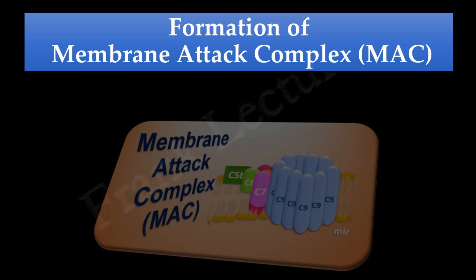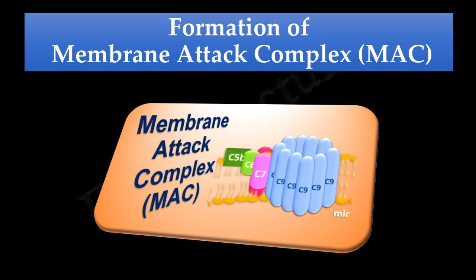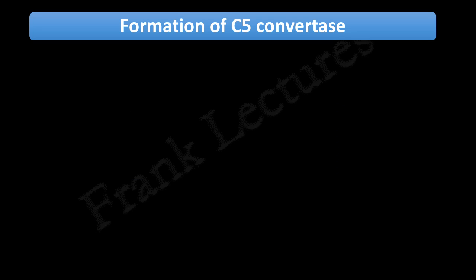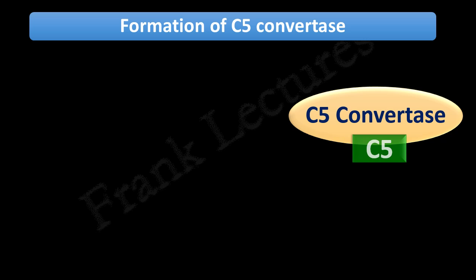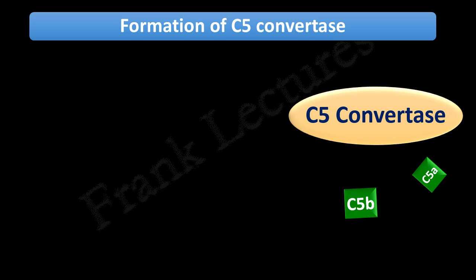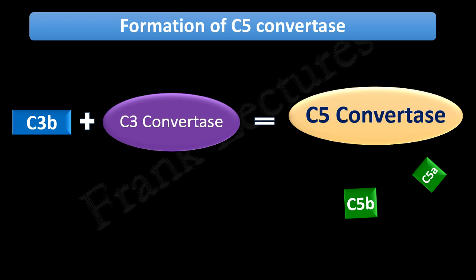Finally, the most important consequence of complement activation is the formation of the membrane attack complex, abbreviated as MAC. First, we need to understand the formation of C5 convertase. As the name indicates, C5 convertase cleaves protein C5 into larger and smaller fragments. When one or more C3b proteins bind to the C3 convertase, it results in an enzyme that acts on C5, known as C5 convertase. This C5 convertase cleaves C5 into C5a — the smaller fragment which triggers inflammation — and C5b, which contributes to the formation of the membrane attack complex.